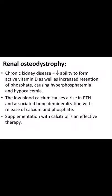Renal osteodystrophy occurs in people with chronic kidney disease. There is decreased ability to form active vitamin D as well as increased retention of phosphate, causing hyperphosphatemia and hypocalcemia. The low blood calcium causes a rise in parathyroid hormone and associated bone demineralization with release of calcium and phosphate. Supplementation with calcitriol is effective in this therapy.